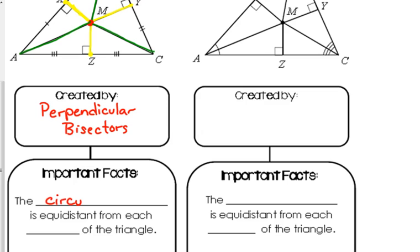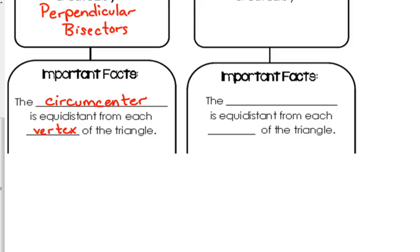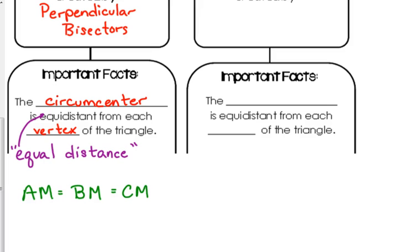So the circumcenter is what we call equidistant. Equidistant is just a fancy way of putting the two words equal and distance together from each vertex of the triangle. So equidistant is equal distance. So that means that AM, segment AM, is equal in length to segment BM, which is equal in length to segment CM. From the circumcenter to each vertex is the same distance.